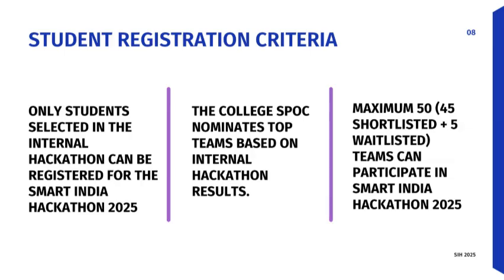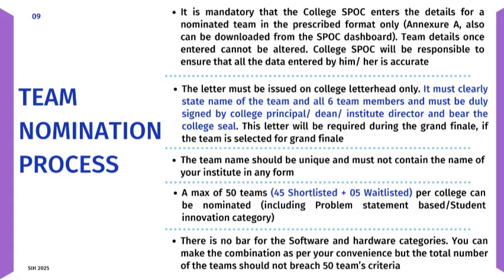For the team nomination process, it is mandatory that the college SPOC enters the team details in the prescribed format, which can be downloaded from the SPOC dashboard. Once team details are entered, they cannot be altered, and the SPOC is responsible for ensuring all data is accurate. The authorization letter must be issued on college letterhead, clearly stating the team name, all six members, and be signed by the college principal.